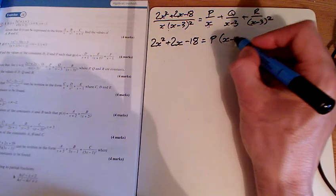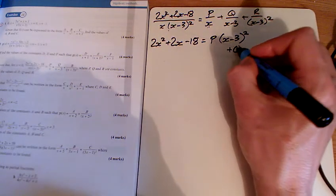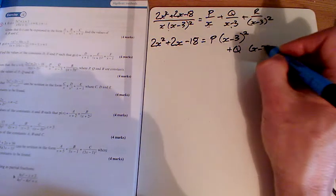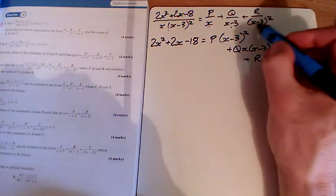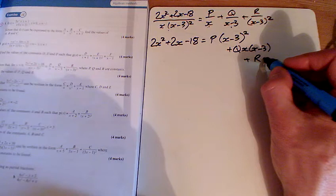I've already got the x, so I need an x minus 3 all squared, plus q. This is the one that people get wrong. I need another x minus 3, and I need the x. And r has already got the x minus 3 all squared, it just needs the extra x there.